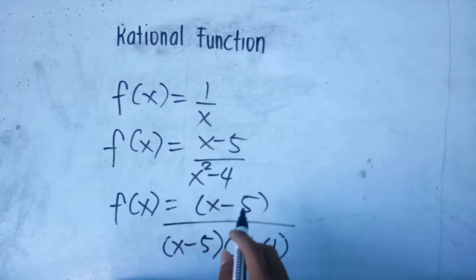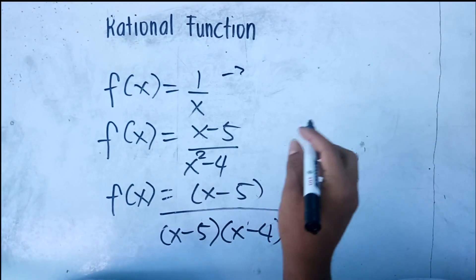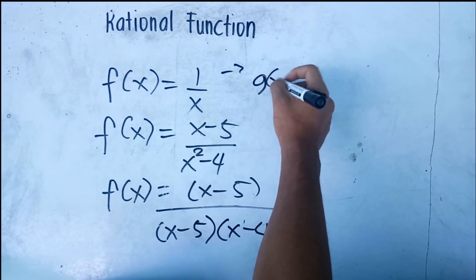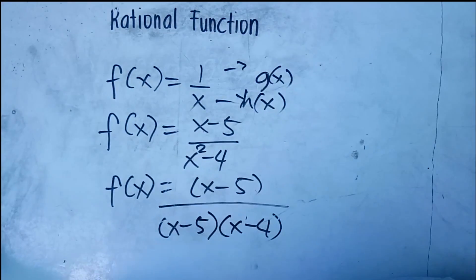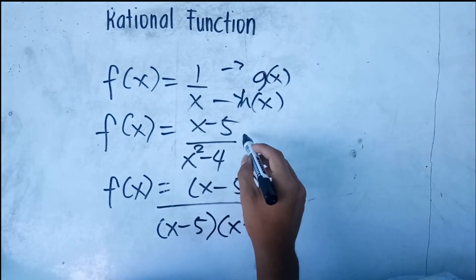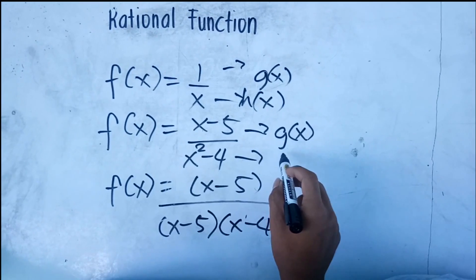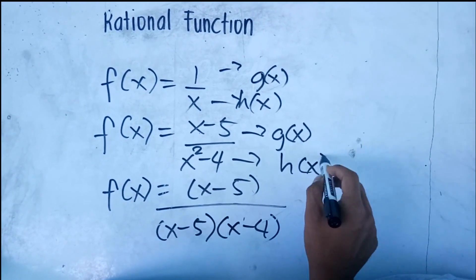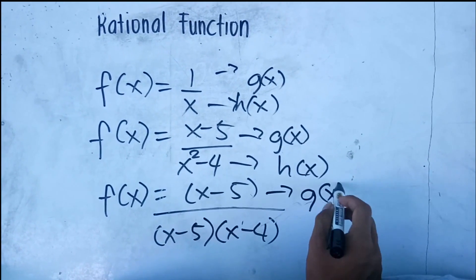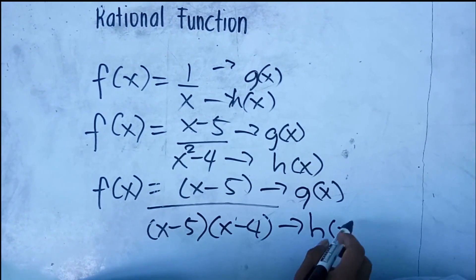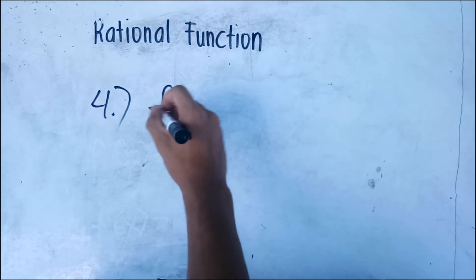In example number one, f of x equals one over x — one is the g of x and x is h of x. In example number two, x minus five is our g of x and x squared minus four is h of x. Similarly in example number three, the numerator is our g of x and the denominator is h of x.